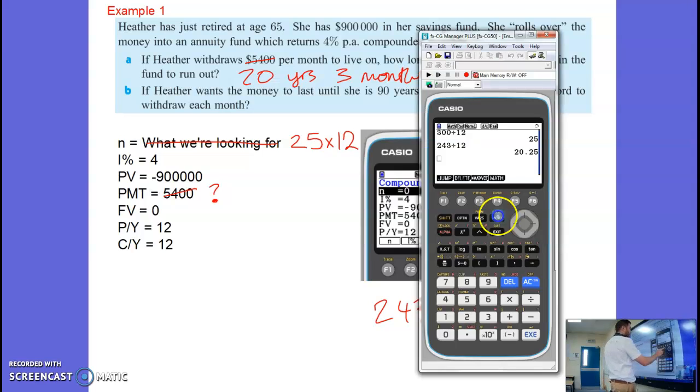And we're going to go back to our financial. And we'll change N to 25 times 12. And your calculator will do that for you. Change it to 300. And then we've got the present value is still the same. Payment is what we're looking for.